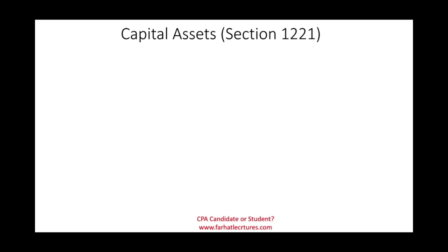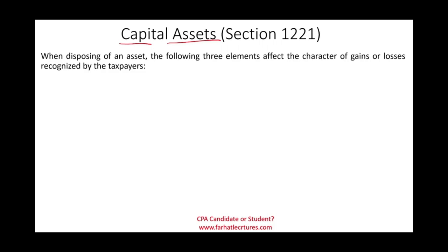Welcome to this session on capital assets, or Section 1221. When we dispose of or sell an asset, there are three elements that could affect the character of the gain or loss recognized by the taxpayer. Depending on what type of asset you have — and here we're dealing with capital assets — it determines how you're going to be taxed, or whether a loss is deductible.